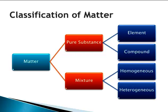Matter can be classified as either a pure substance or a mixture of substances. A pure substance can be either an element, which consists of only one type of atom, or a compound, which consists of more than one type of atom chemically combined. A mixture of substances consists of more than one substance physically — not chemically — combined. A homogeneous mixture is the same throughout, like a pitcher of Kool-Aid, and is referred to as a solution. A heterogeneous mixture is not the same throughout, like a bag of trail mix.